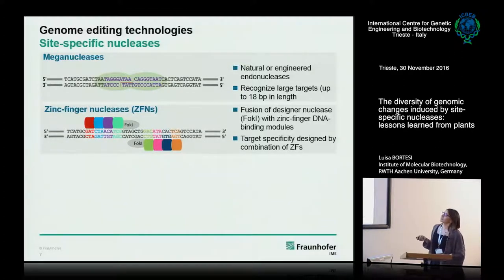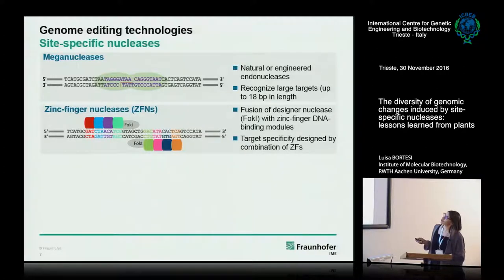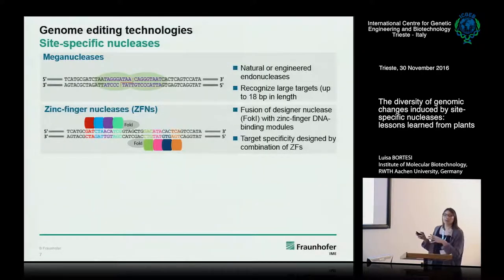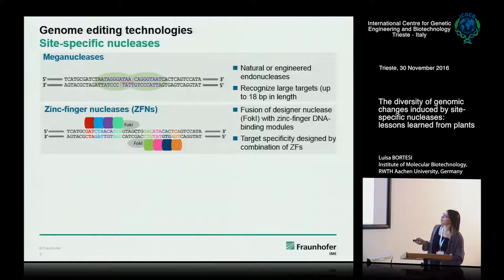The second and revolutionary site-specific nucleases were zinc-finger nucleases. These work as dimers — you need two proteins to have the double-strand break. The break is performed by the FokI domain, which acts as a dimer and is unspecific. To give specificity to the target, you use zinc-finger modules, each of which recognizes three base pairs. By putting together several zinc-fingers, you can have a specificity of usually around 12 bases, giving a much larger target sequence.